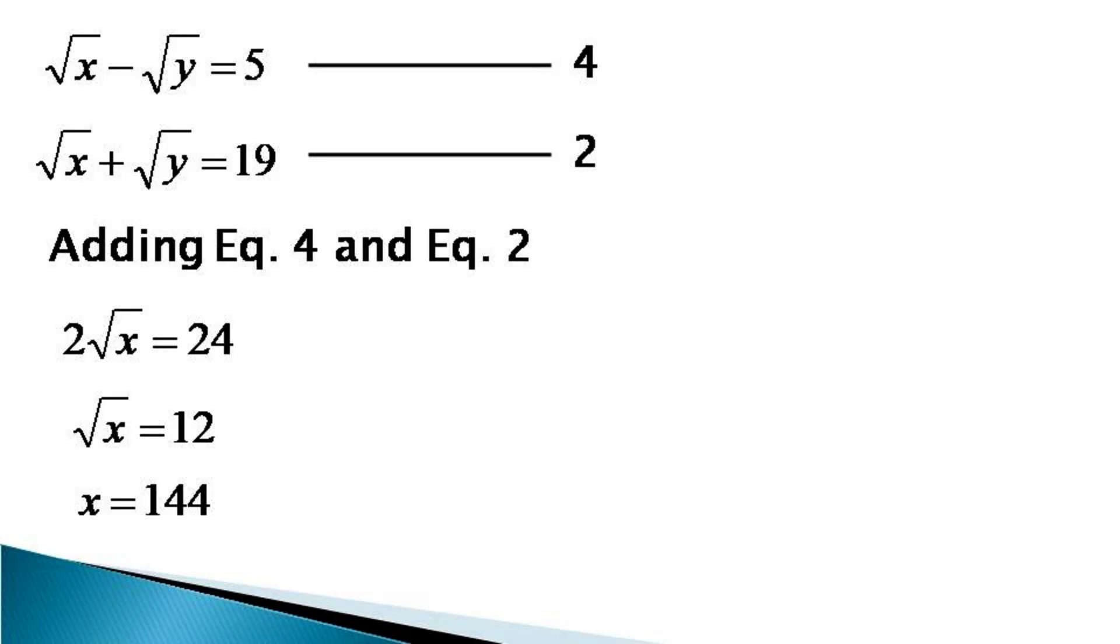Now we recall equation 1 which is X minus Y is equal to 95 and put the value of X in this equation to get 144 minus Y is equal to 95 and this gives us the value of Y is equal to 49.